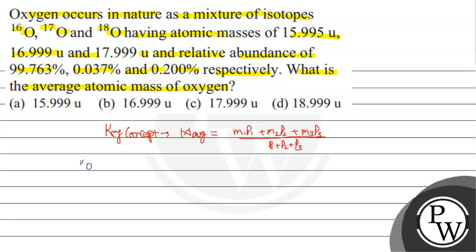For O16, M1 equals 15.995, P1 equals 99.763%. For O17, M2 equals 16.999, P2 equals 0.037%. For O18, M3 will be equal to 17.999, P3 will be equal to 0.200%.